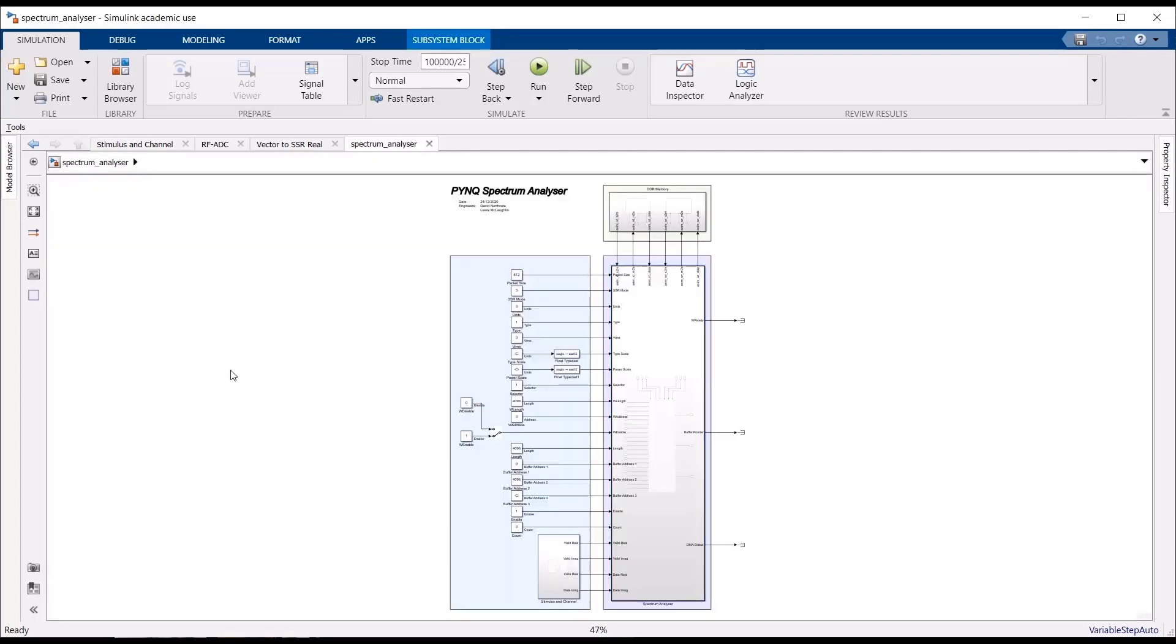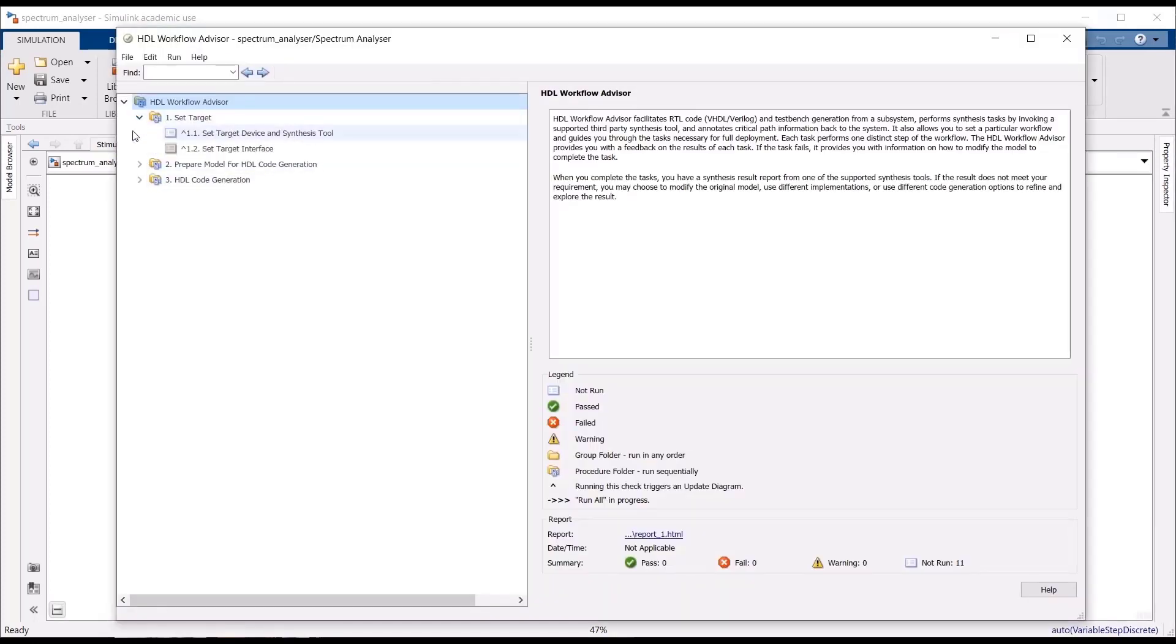Using similar techniques as System Generator, the HDL-coder's Spectrum Analyzer design can be validated in simulation. When we are happy with the design, we can generate an IP core for integration in Vivado IP Integrator. The HDL-coder workflow advisor allows us to quickly generate and configure an IP core.